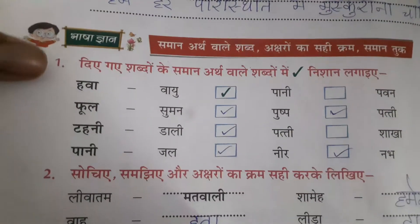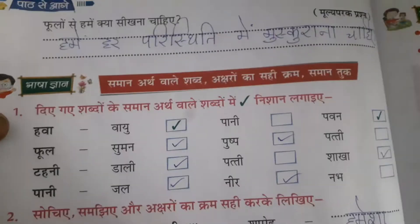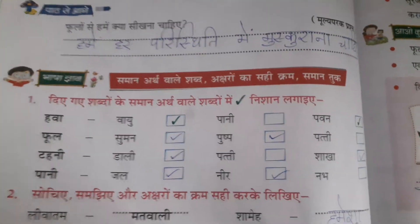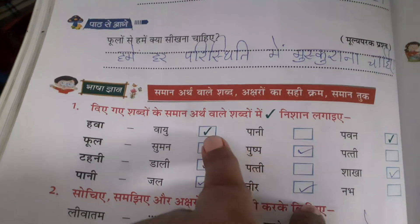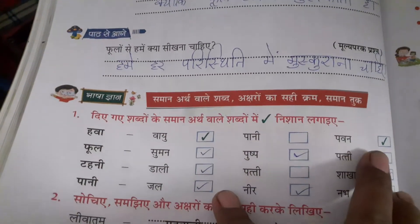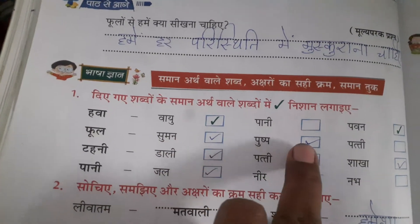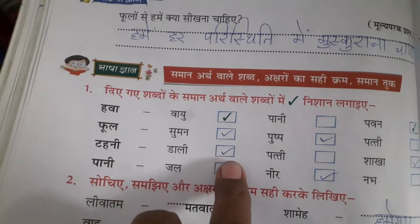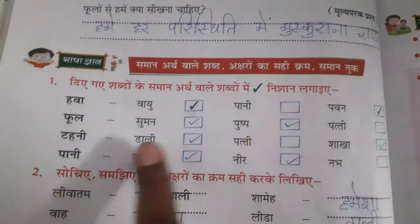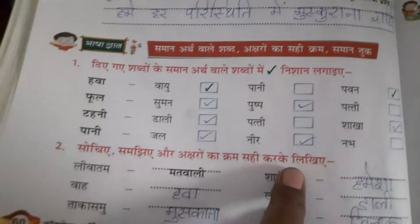Next box. Same samanard shabd. Vayu — two meanings are there: vayu and pavan also. Fool, suman, pushp. Tahani, dali, shakha. Paani, jal, neer.